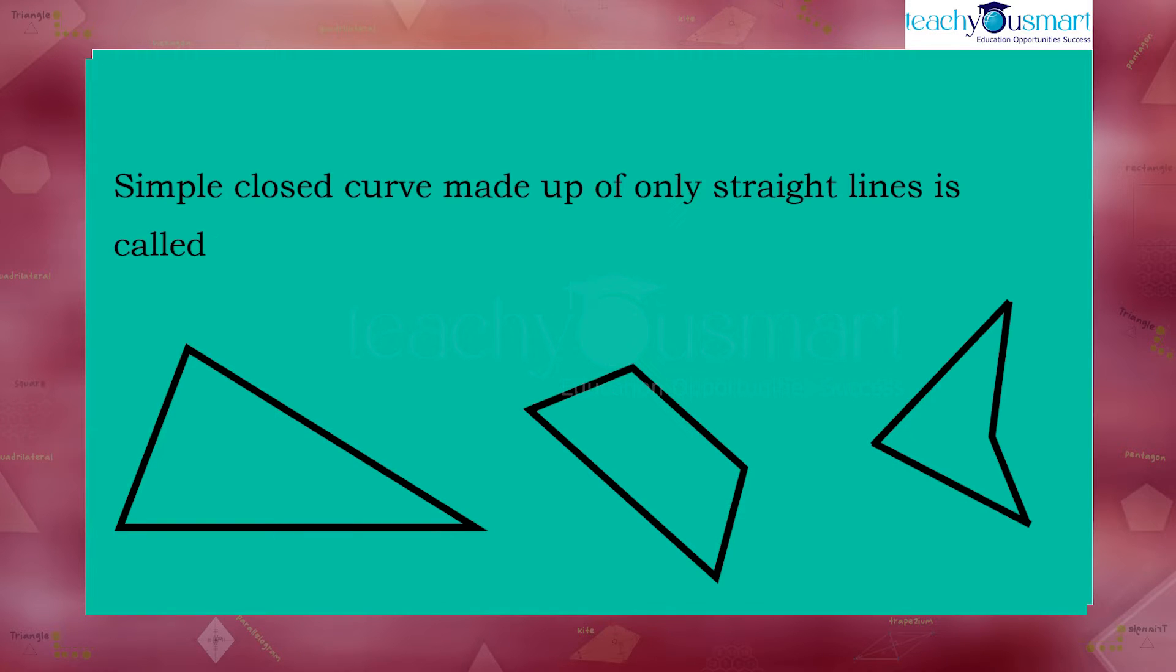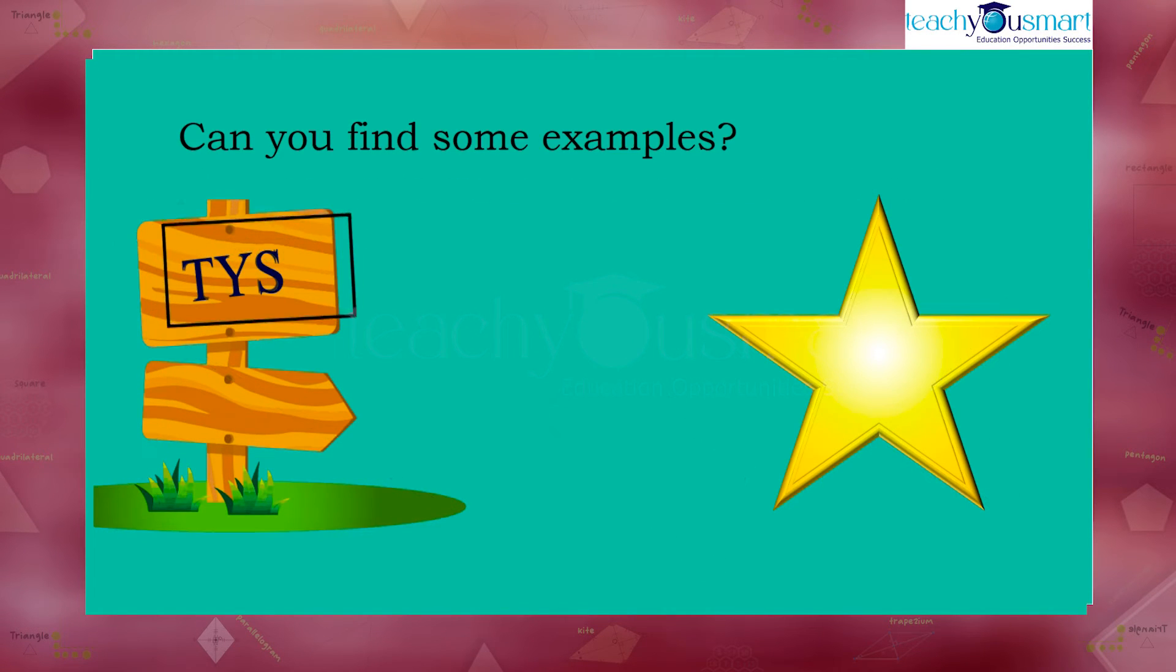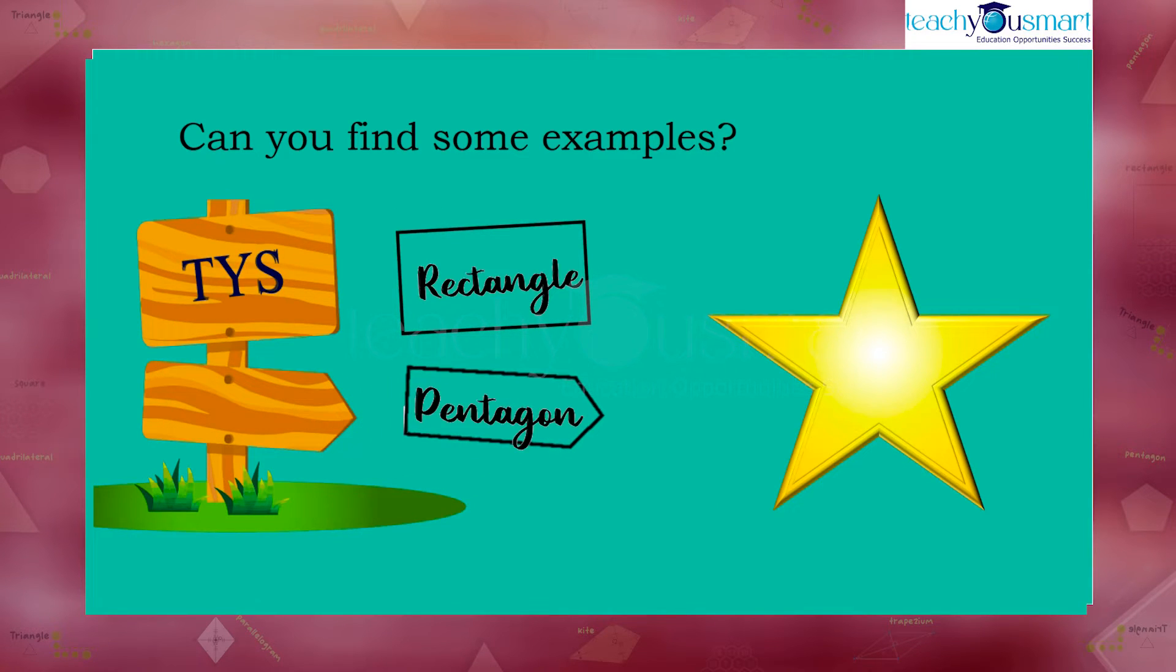They are made of only straight lines, and these are called polygons. Can you find some examples? Rectangle and pentagon in a signboard and star are some examples.